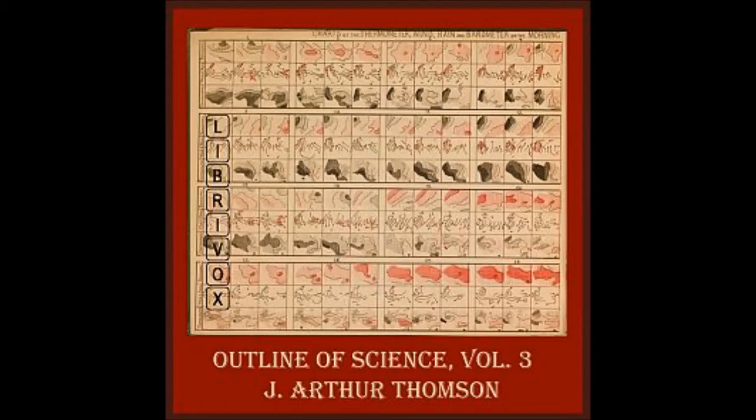There are one hundred thousand dicotyledonous flowering plants. Darwin speaks of finding twenty different kinds of flowering plants on a patch of turf four feet by three, and there may be as many different kinds of animals on one stone brought up from the sea floor. The study of marine animals has been enthusiastic and intense for many years, but those who know most about it will agree with what the poet Spenser said long ago.